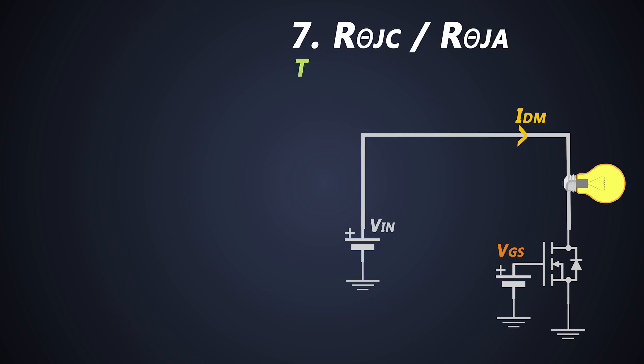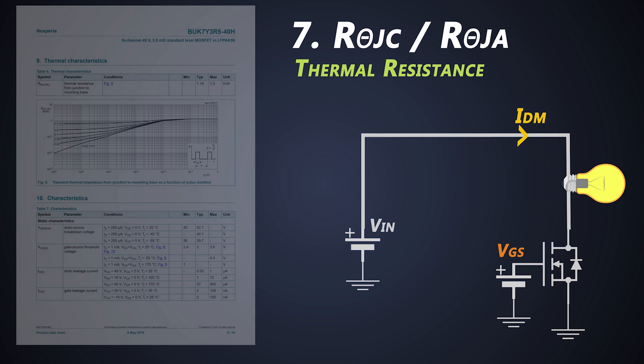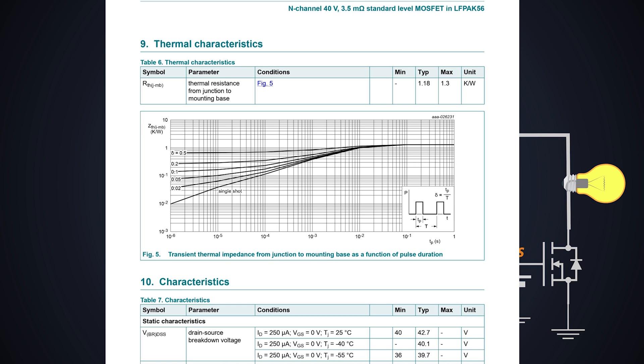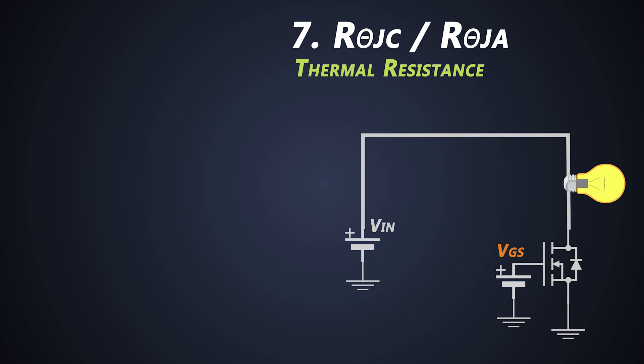Now we need to know the thermal characteristics of a MOSFET. This is the thermal resistance of the MOSFET from junction to case or we can call it as junction to mounting base. It denotes the capability of the MOSFET to conduct the excessive heat out of it. If we want to calculate the temperature rise in a MOSFET, then this formula is very helpful.